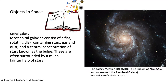Spiral galaxy: pretty large, with multiple star systems within them. They are flat, rotating discs with a central collection known as the Bulge.